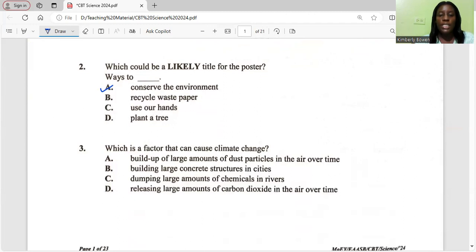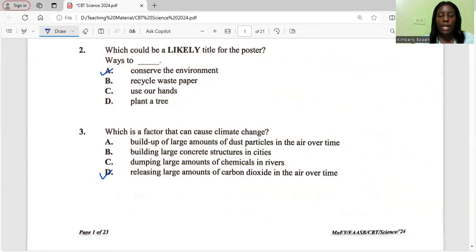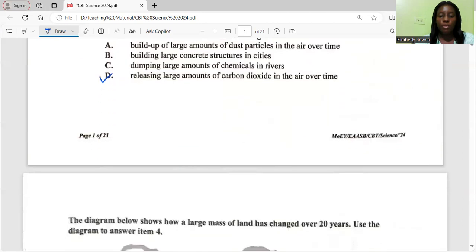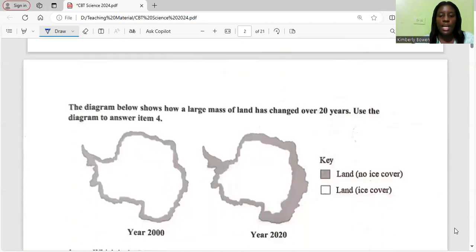Number three: which is a factor that can cause climate change? The correct answer is releasing large amounts of carbon dioxide into the air over time. We've talked about carbon emission and how that affects the environment and climate change. This is a repeated question we saw in one of the past papers.